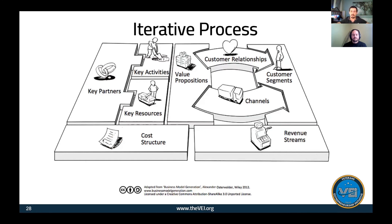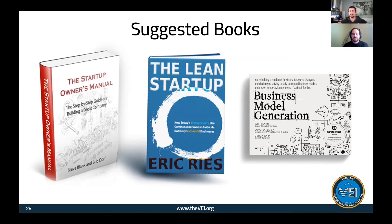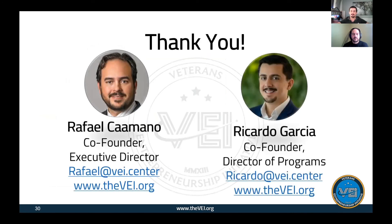We have three book recommendations if you want to learn more about the canvas. First is The Startup Owner's Manual by Steve Blank - he's considered the father of the lean startup methodology and a professor at Stanford. Second is The Lean Startup by Eric Ries, which talks about the methodology as a whole. Third is Business Model Generation by Alexander Osterwalder, which dives deep into the canvas and different exercises you can do to test your business concepts.